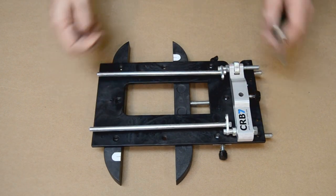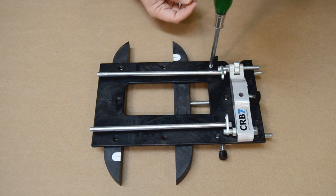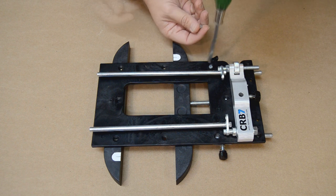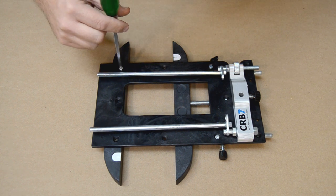The MHL attaches to the base of the CRB7 rapidly using just a couple of provided screws. The fixed jaw of the MHL mounts to the CRB7 base in pretty much the same way.